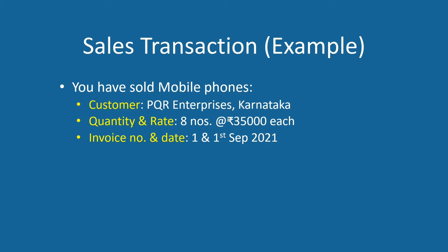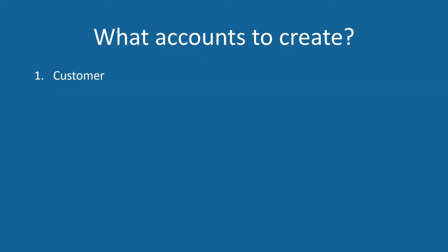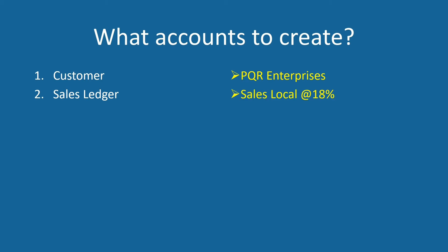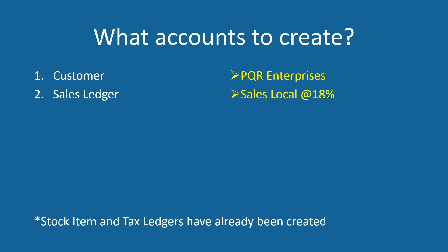Let's assume you have sold mobile phones to PQR Enterprises, who is also in Karnataka. Quantity, rate, and invoice details are given on the screen. In order to create a sales voucher for this transaction, let's see what accounts we have to create. First, we have to create the customer's account, which is PQR Enterprises here. We also have to create a sales ledger — let's name it Sales Local at 18%. We have already created the stock item and tax ledgers, so let's create these two accounts one after the other.